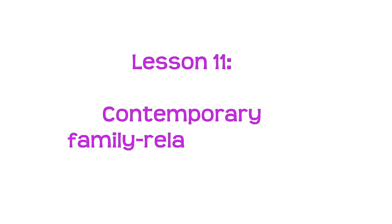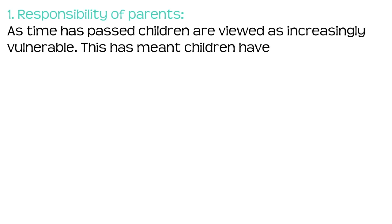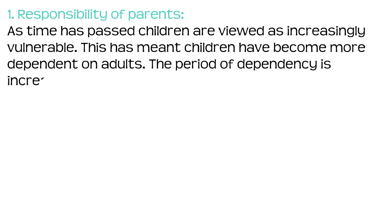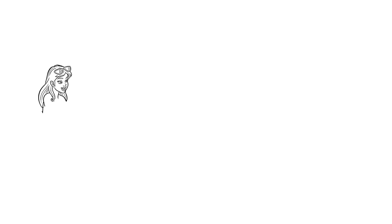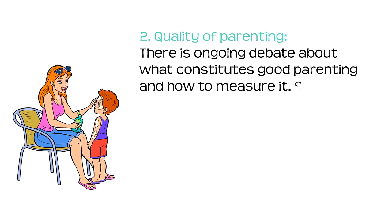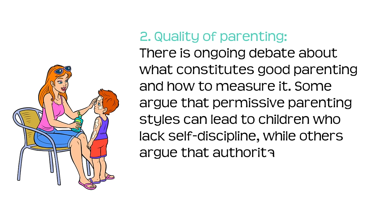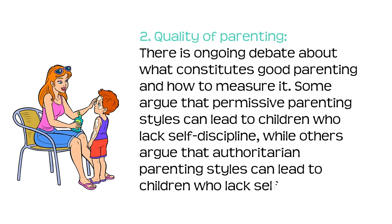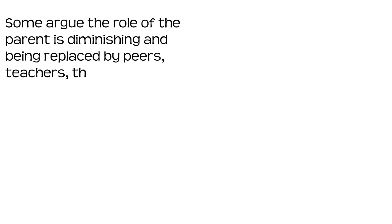Lesson 11: contemporary family related issues. Number one: the responsibility of parents. As time has passed, children are viewed as increasingly vulnerable. This has meant children have become more dependent on adults, and the period of dependency is increasing as children are now expected to remain in education until they are 18. Number two: the quality of parenting. There is ongoing debate about what constitutes good parenting. Some argue that permissive parenting styles can lead to children who lack self-discipline, while others argue that authoritarian parenting styles can lead to children who lack self-esteem. Some argue the role of the parent is diminishing and being replaced by peers, teachers, the internet and games. Tablets and TV are known as electronic babysitters, and increased access to technology means parents have less control over their children's behaviour.